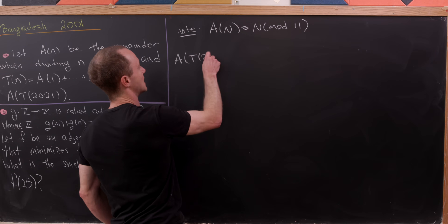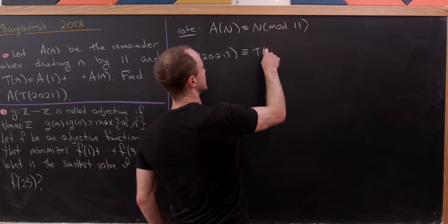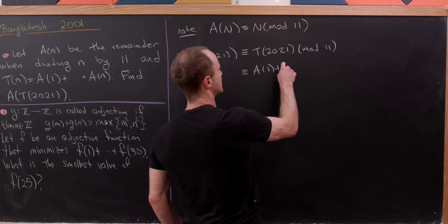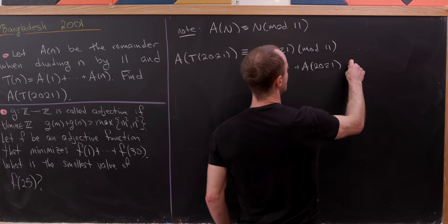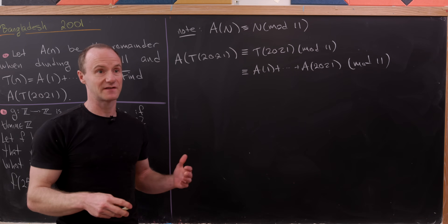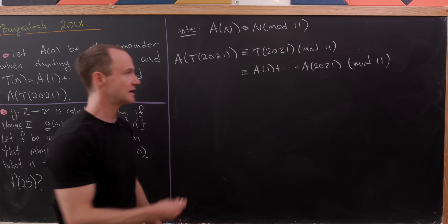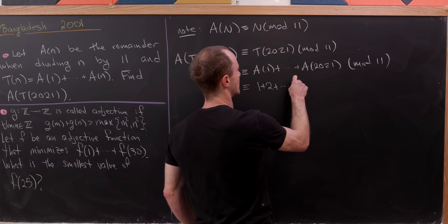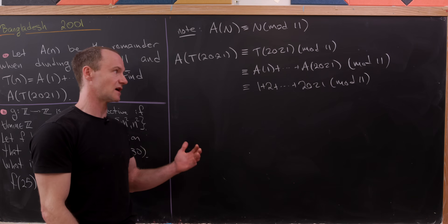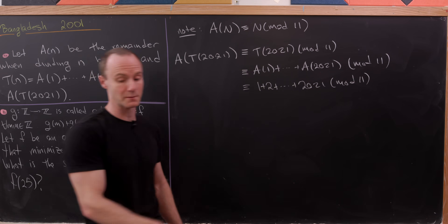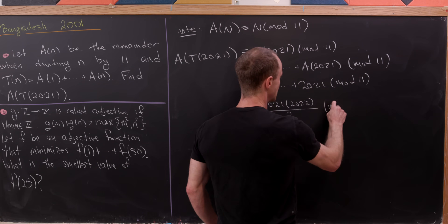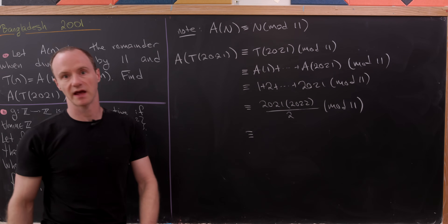So let's look at a of t of 2021. That's congruent to t(2021) mod 11, which is congruent to a(1) plus up to a(2021) mod 11 — just keeping in mind how t is defined. By the fact that addition is well defined mod 11, we can replace this with 1 plus 2 all the way up to 2021 mod 11. Now we can use the standard formula for a triangular number.